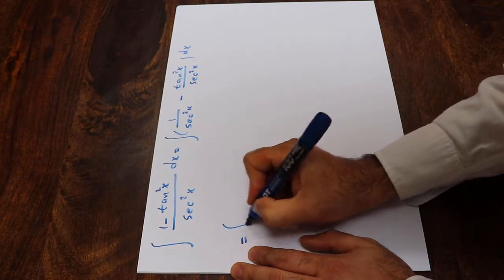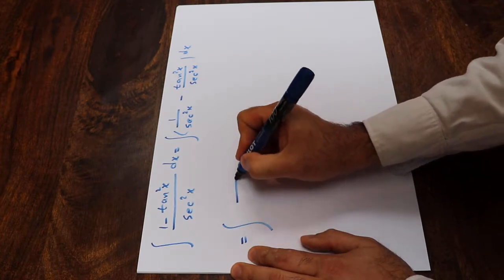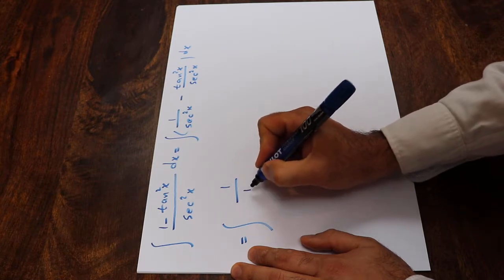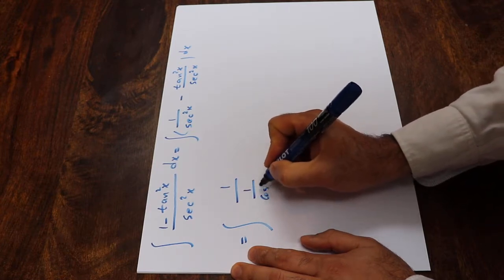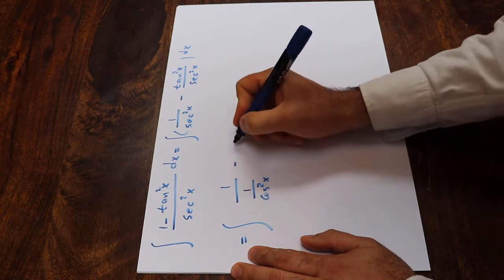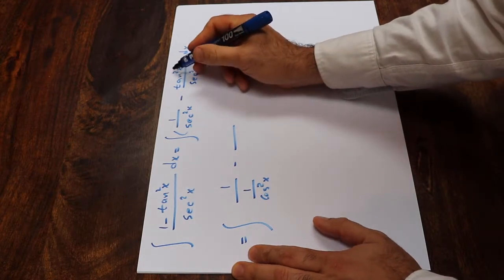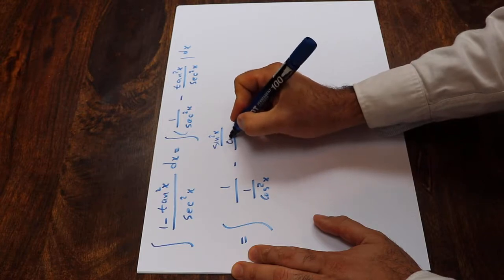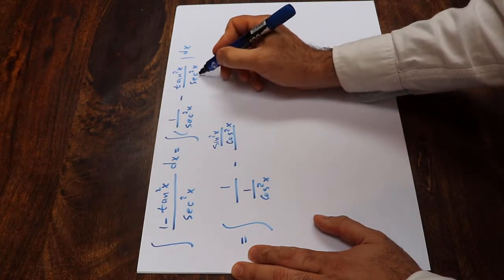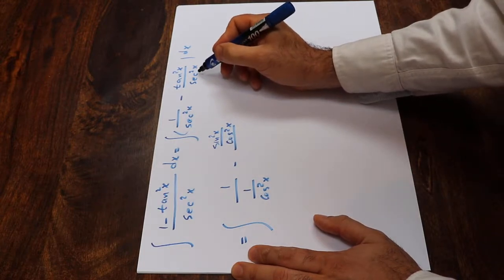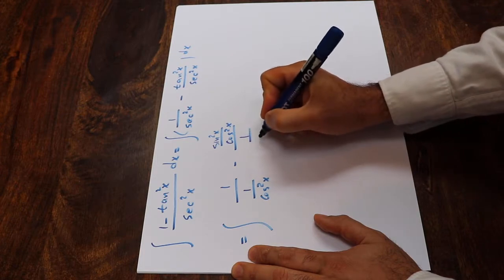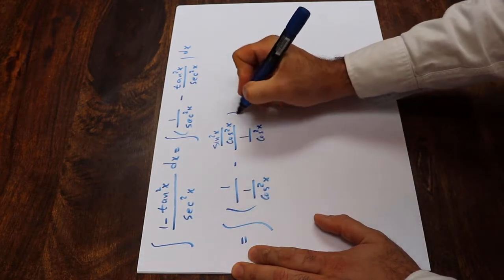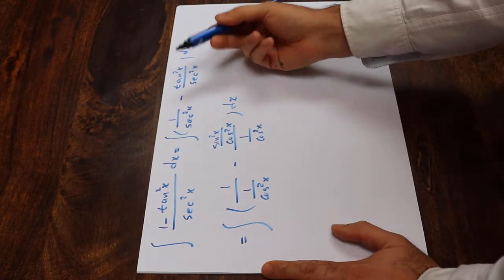And this integral you can rewrite as the integral of 1 — instead of secant square x I write 1 divided by cosine square x — minus instead of tangent square x I write sine square x divided by cosine square x, and instead of secant square x I write 1 divided by cosine square x dx. That is basically trigonometry.